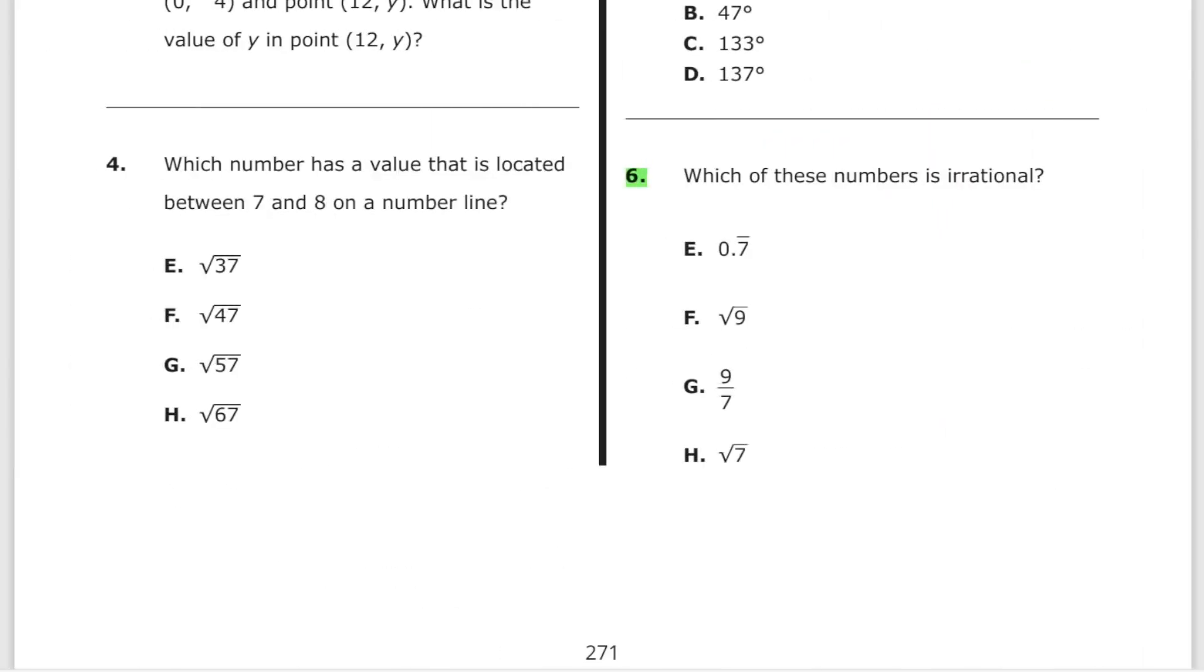Problem number 6. Which of these numbers is irrational? For quite some time I found this concept to be especially difficult but let me explain it in super easy terms. Rational number means that the number can be expressed as a fraction. For example, 6 is a rational number because 6 can be expressed as 6 over 1. 9 over 7 for example, it's a rational number as well because that's a fraction. Now 0.7 repeating for example, that's equal to 7 over 9, that can be expressed as a fraction so it's also rational.